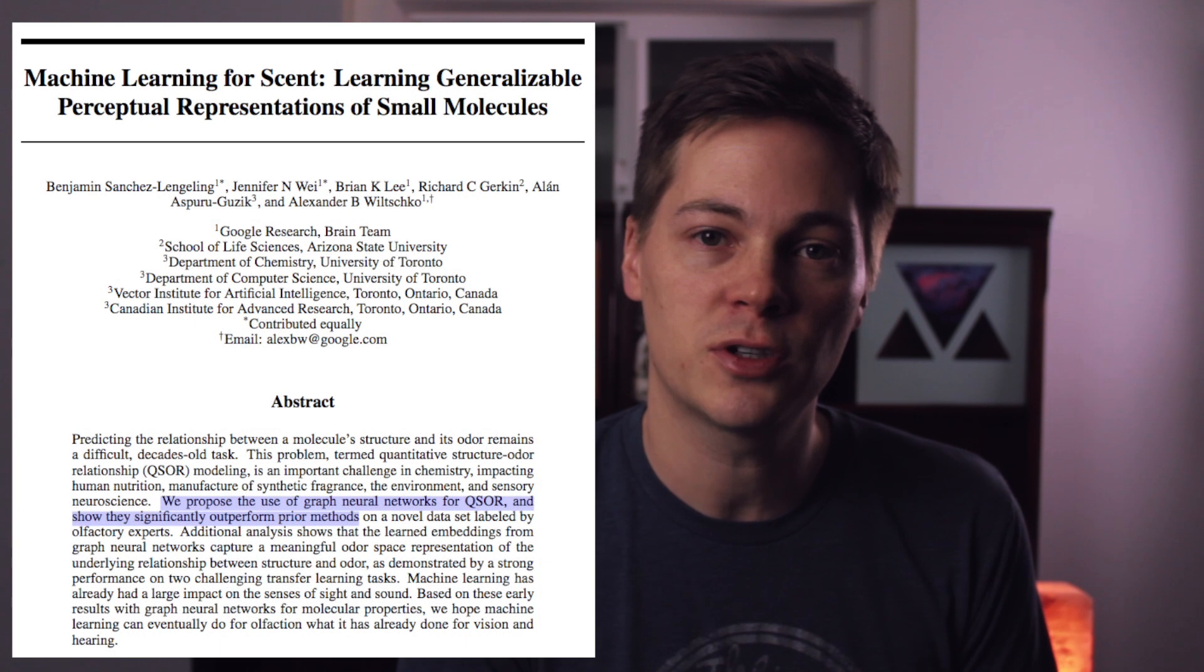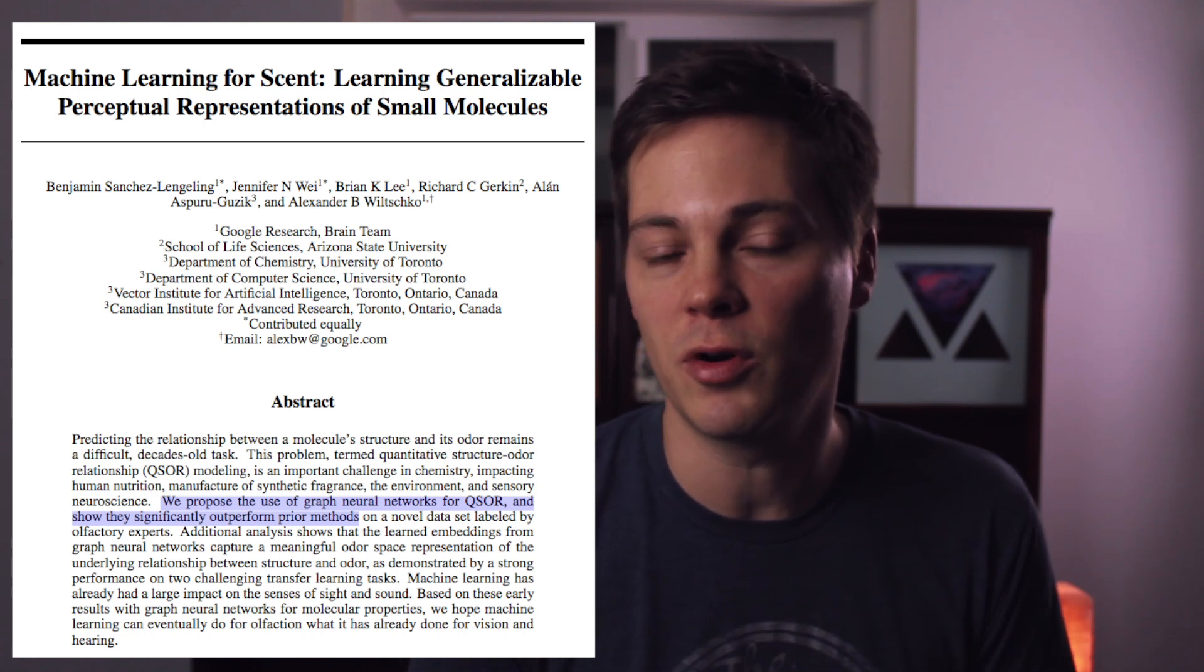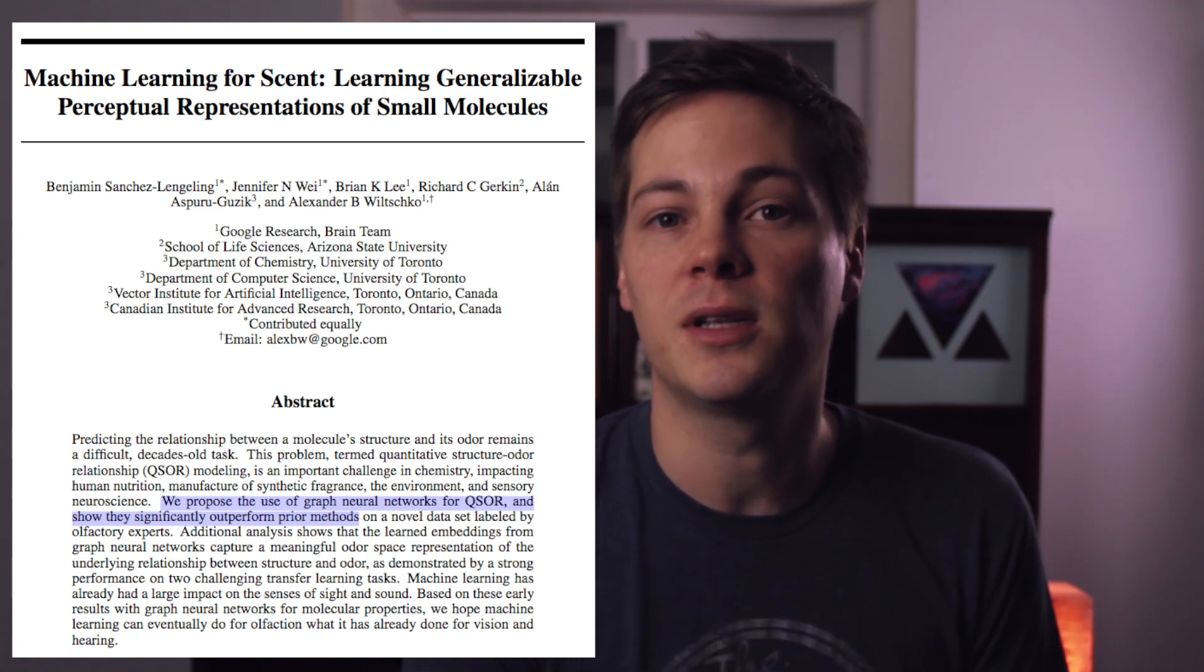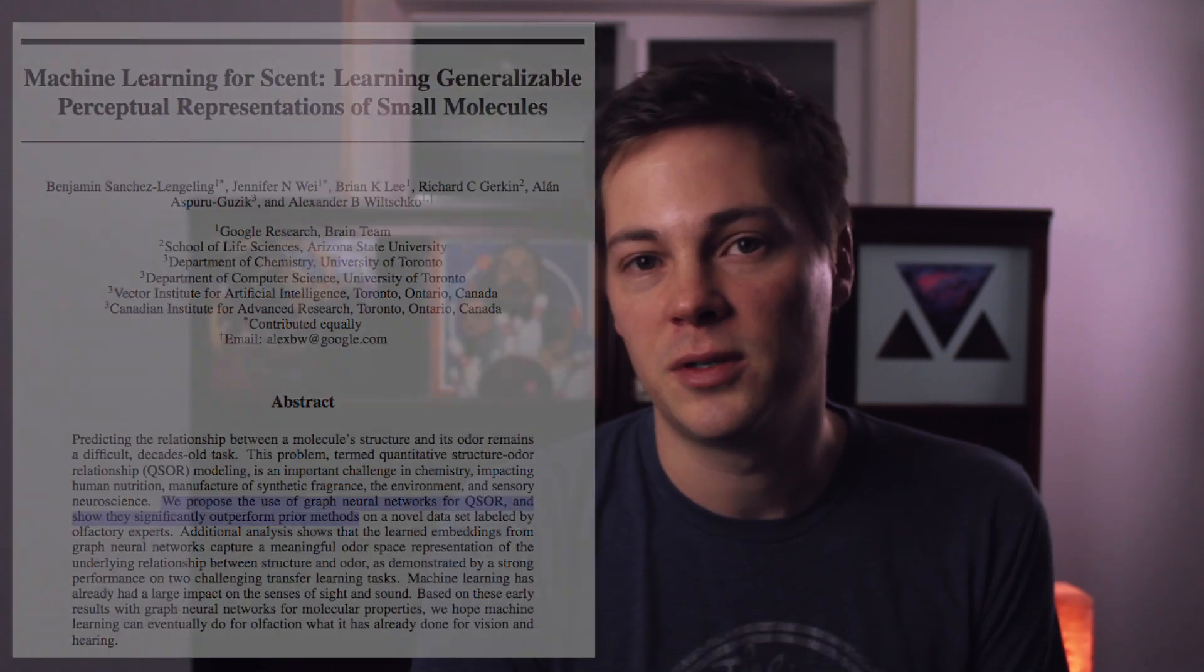If you haven't yet gone down the rabbit hole of graph neural networks, you're in for a treat. It's a super interesting subfield of machine learning that's starting to get a lot of attention and activity, some impressive results. One thing you may have seen from the Google Brain team is they use the molecular structure of compounds along with graph neural networks to predict their aroma and show that that significantly outperformed prior methods.